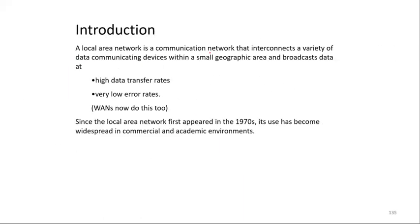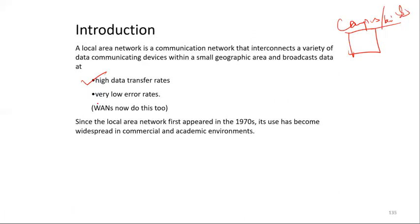A local area network is a communication network that interconnects a variety of data communicating devices within a small geographic area, such as a campus or a building. Any office or building that needs network resources to be connected or resources to be shared can create a local area network. Its advantages include high data transfer rates — because the distance is shorter — and very low error rates. Since the local area network first appeared in the 1970s, its use has become widespread in commercial and academic environments.